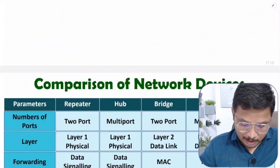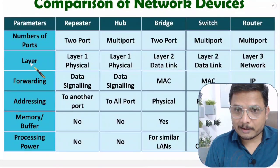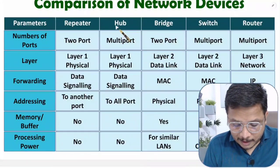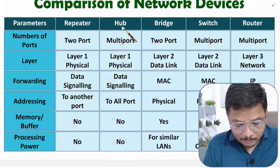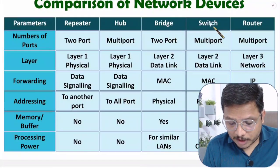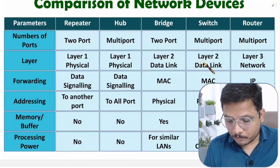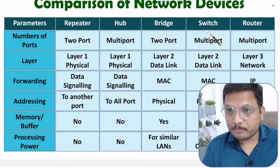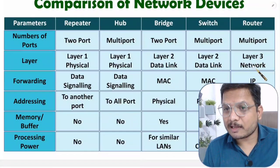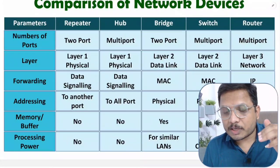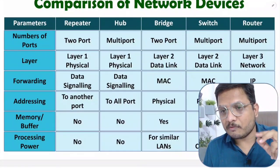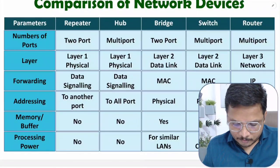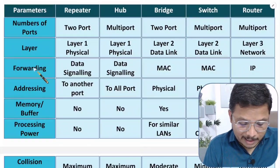Now talking about the second parameter — layer. Repeater and hub function at layer number one, that is the physical layer. Hub is a multi-port repeater. Bridge and switch function at the data link layer — switch is a multi-port bridge. Router functions at the network layer, that is layer number three. There can be questions in UGC NET examination based on which layer which device is functioning at.